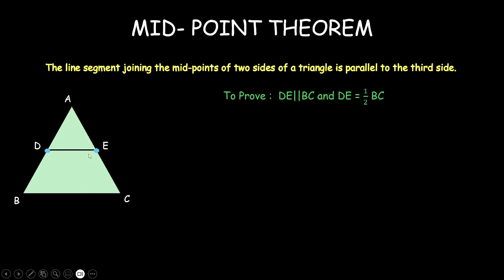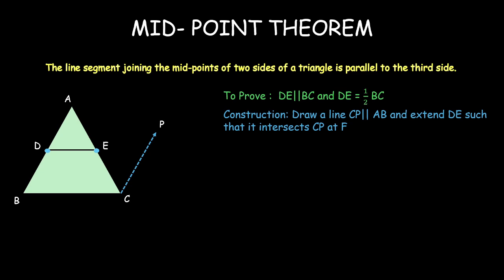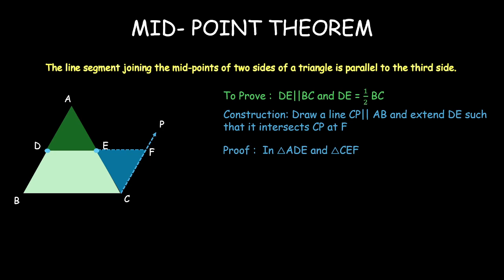No measurement is given, and I also want DE to be half of BC. If I extend this line such that it equals BC, we can use congruency of triangles, since AE is equal to EC. Let us draw a line from C which is parallel to AB — I am drawing CP parallel to AB — and extend DE so that it intersects CP at F. Now we have two triangles: triangle ADE, the green coloured triangle, and triangle CFE, the blue coloured triangle.